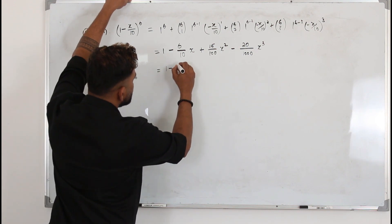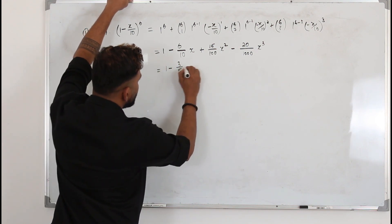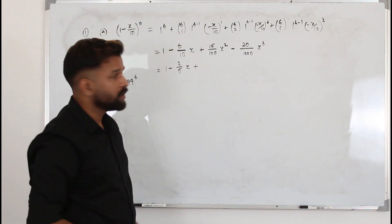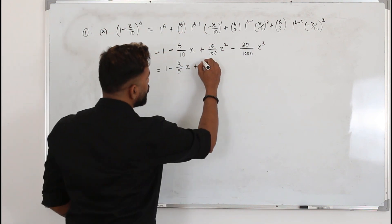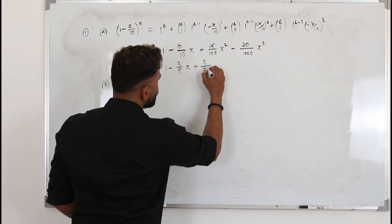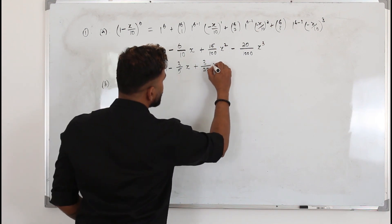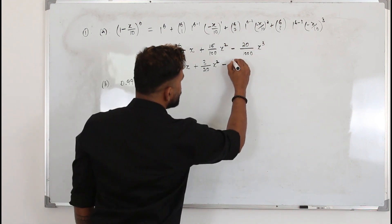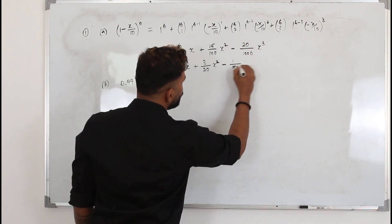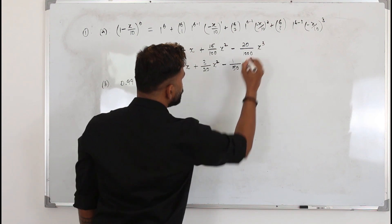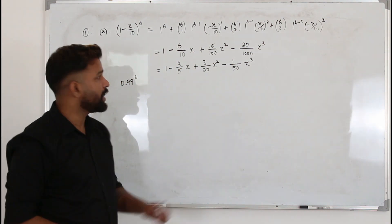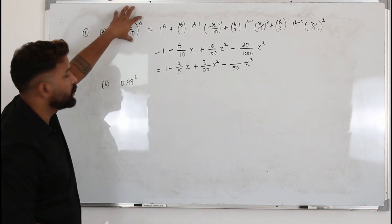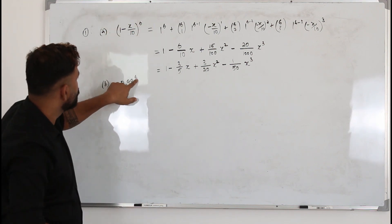Simplifying all terms by common factors: 6/10 simplifies to 3/5, giving 1 − 3/5 x. Then 15/100 simplifies to 3/20, giving + 3/20 x². And 20/1000 simplifies to 1/50, giving − 1/50 x³. That's the answer for Part A.